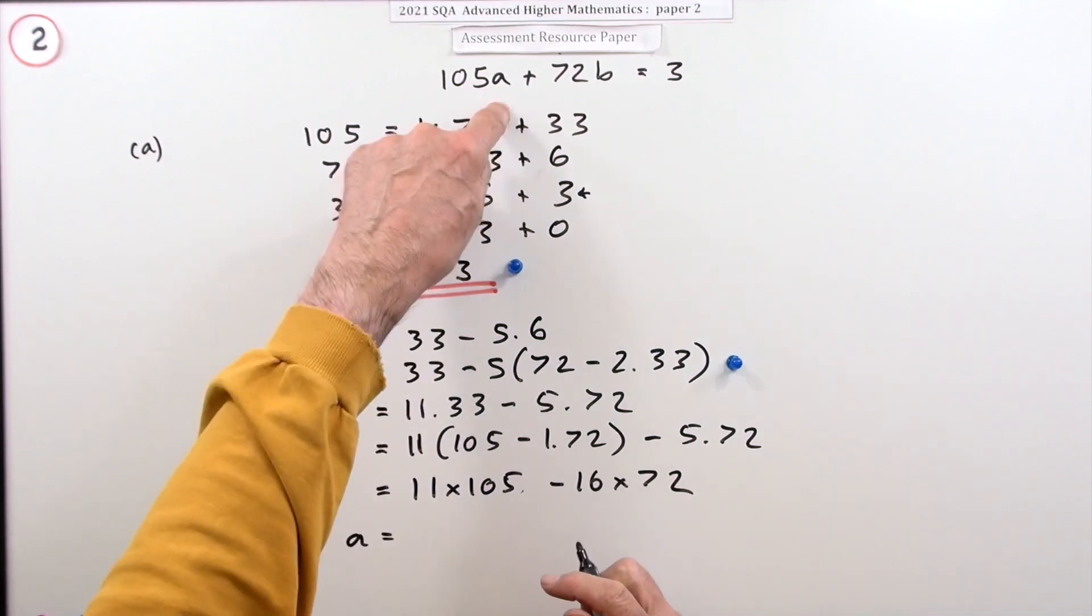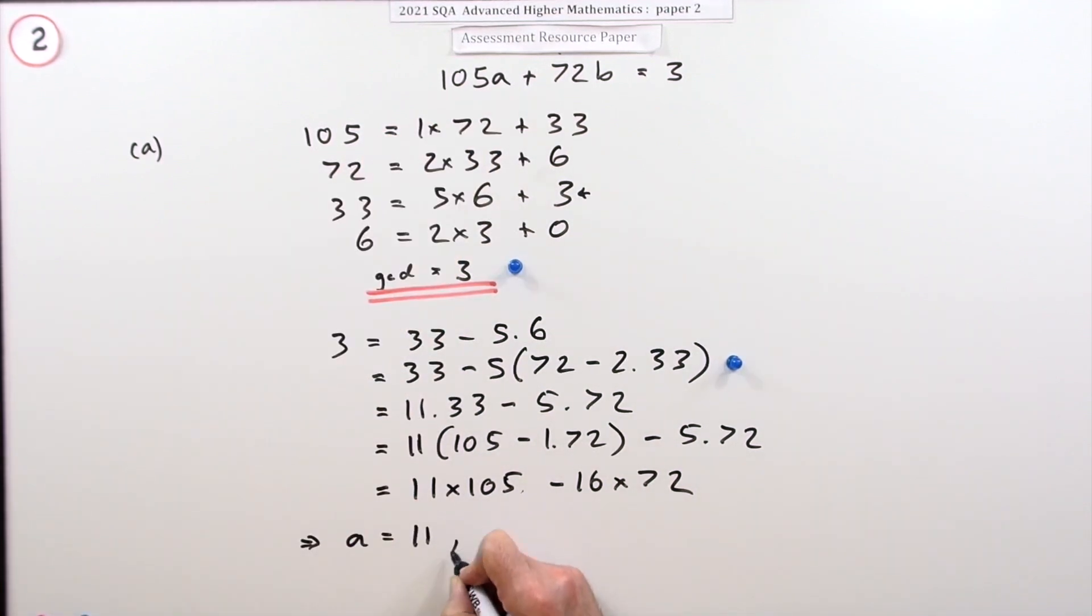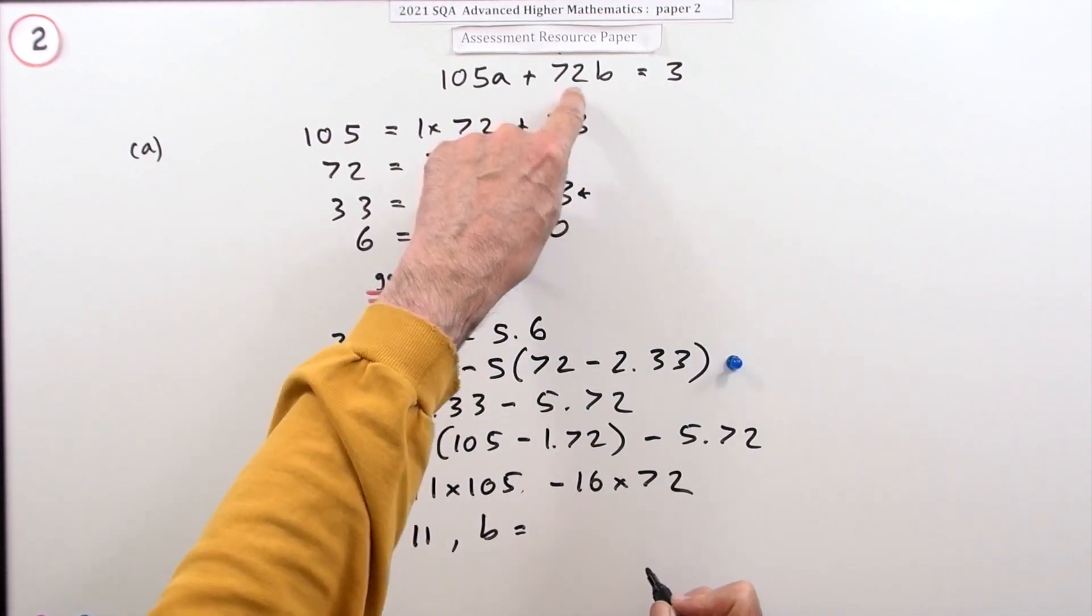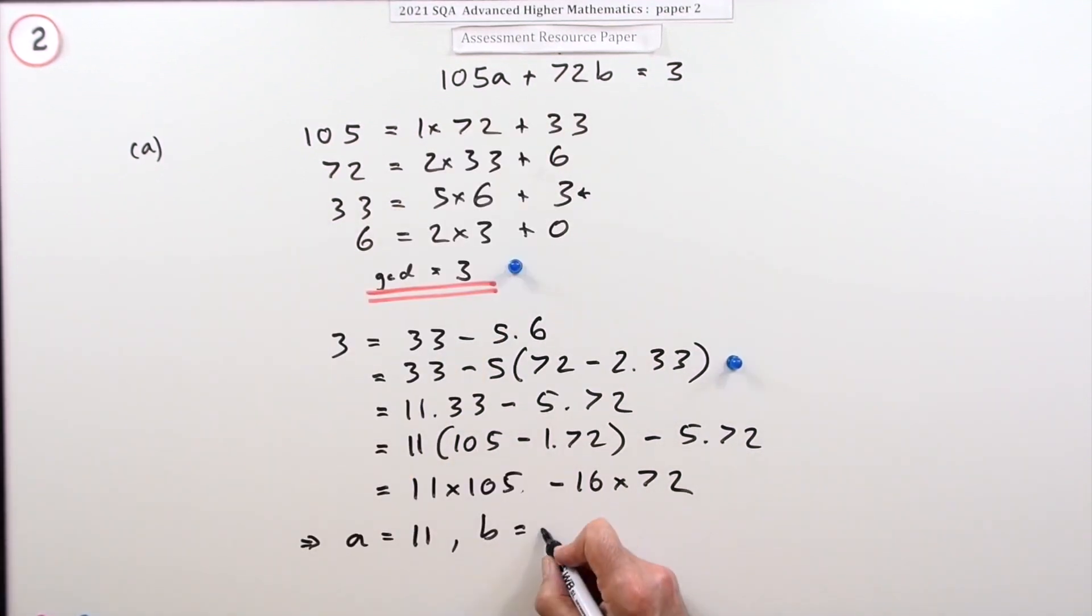Comparing to the original equation, A must be whatever's multiplying 105, that's 11, and B is whatever's multiplying 72, that's negative 16. That gets the third mark.